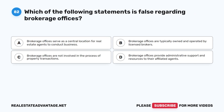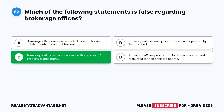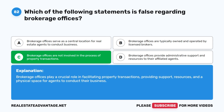Question 82: Which of the following statements is false regarding brokerage offices? A. Brokerage offices serve as a central location for real estate agents to conduct business. B. Brokerage offices are typically owned and operated by licensed brokers. C. Brokerage offices are not involved in the process of property transactions. D. Brokerage offices provide administrative support and resources to their affiliated agents. The correct answer is C — this is false. Brokerage offices play a crucial role in facilitating property transactions, providing support, resources, and a physical space for agents to conduct their business.